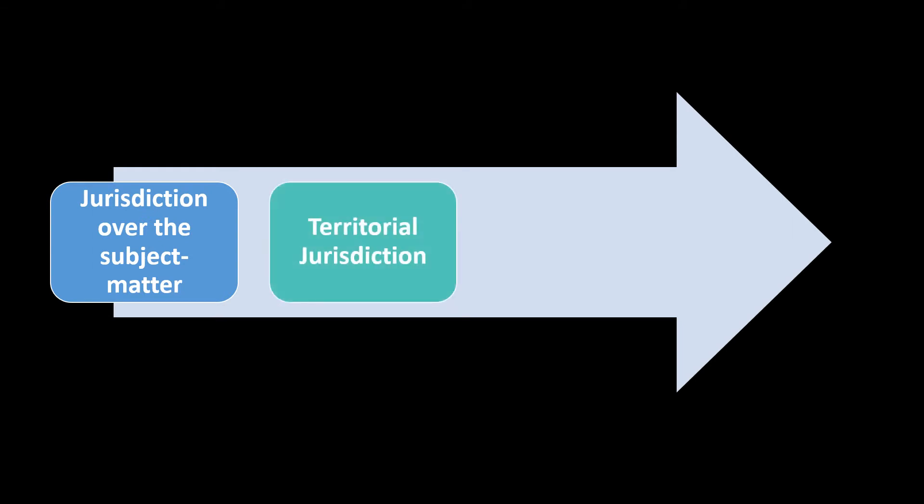There are different kinds of jurisdiction. First is jurisdiction over the subject matter — certain courts are prohibited from entertaining suits of a particular class by statute. For example, we have specific codes to handle environment-related cases. The second is territorial jurisdiction, where every court has its own limits; for instance, a district court is in charge of a district.